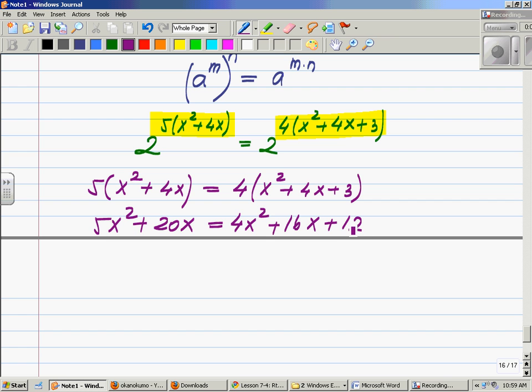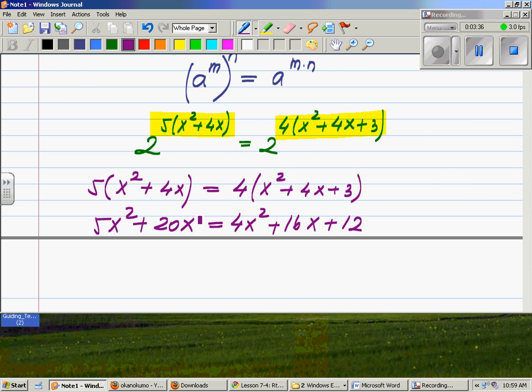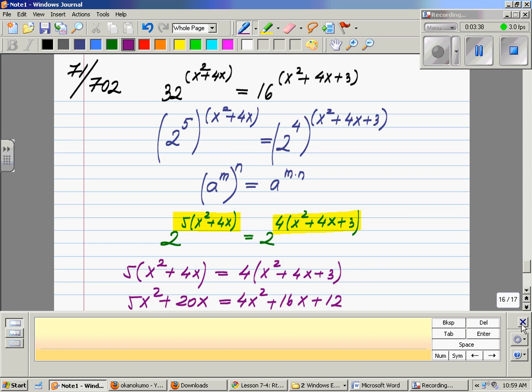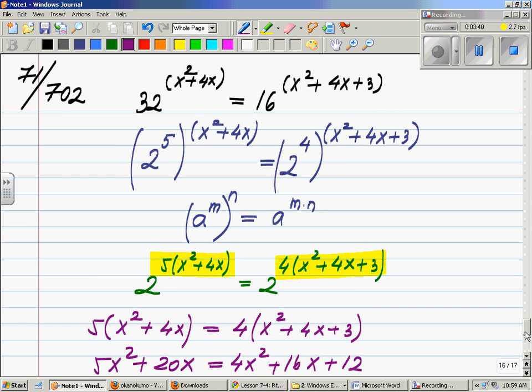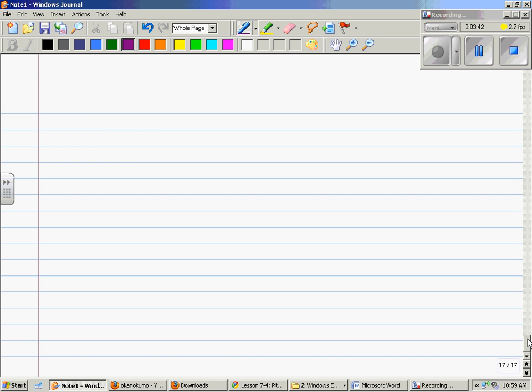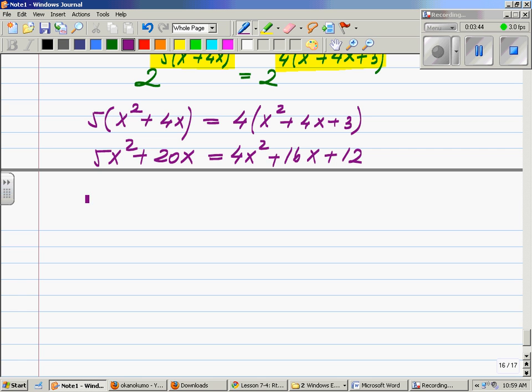Let's move everything on one side, and because the coefficient of my x squared is bigger and positive on this left side, I will subtract everything that's on the right from both sides. Basically everything moves on the other side with a different sign.